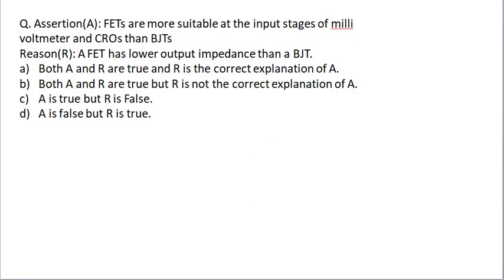Next question is very important. It is assertion reason type question. FETs are more suitable at the input stage of millivolt meter and CROs than BJT. Why? Because we know that FET have high input impedance and low output impedance. FET has low output impedance than BJT. Therefore, I can say both A and R are true, and R is also the correct explanation of A. This is why we are using FET in the input stages of millivolt meter and the CROs than BJT.